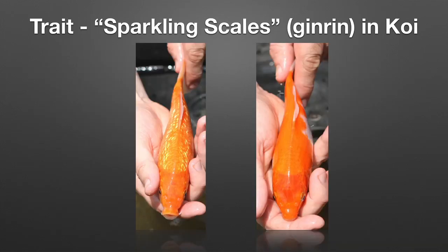You can also see here koi with so-called sparkling scales, or in Japanese 'jinrin.' On the left you can see koi with jinrin, and on the right a normal non-jinrin koi. The scales are very sparkling because they contain an excessive amount of guanine — a pigment that makes fish scales reflective. The larger amount of guanine gives this very specific trait. At Kentucky State University, we investigated the inheritance of this trait — sparkling scales — and also the long-fin mutation in our studies, and we published several articles on this subject.